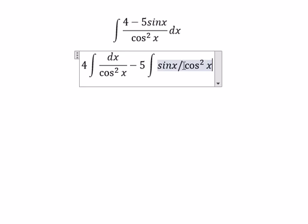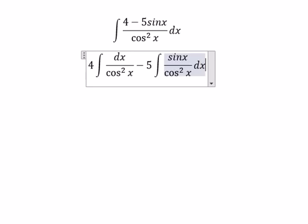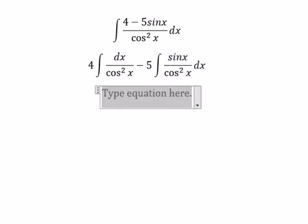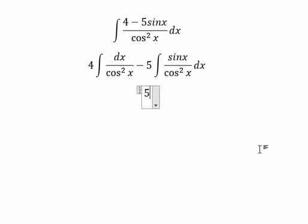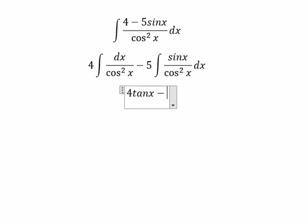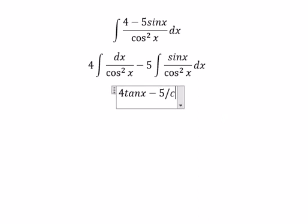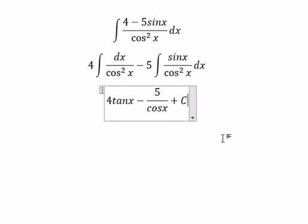For the first one, you get tan x. For the second one, you get negative 1 over cos x, plus C. And that's the final answer.